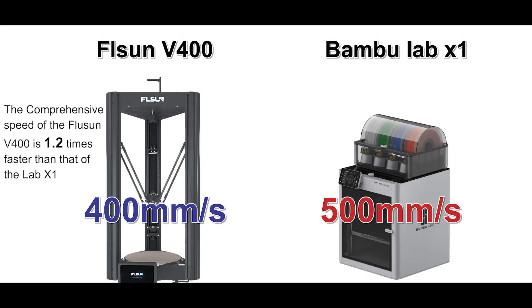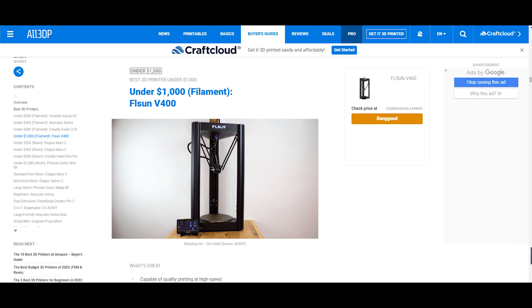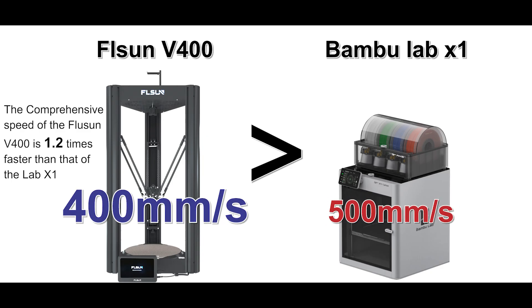After a series of tests, the V400 is undoubtedly faster than the X1 in printing speed, and also confirms the conclusion given by the website All3DP. That conclusion being that 400 millimeters per second is faster than 500 millimeters per second. FL Sun V400 is definitely the leader in printing speed.